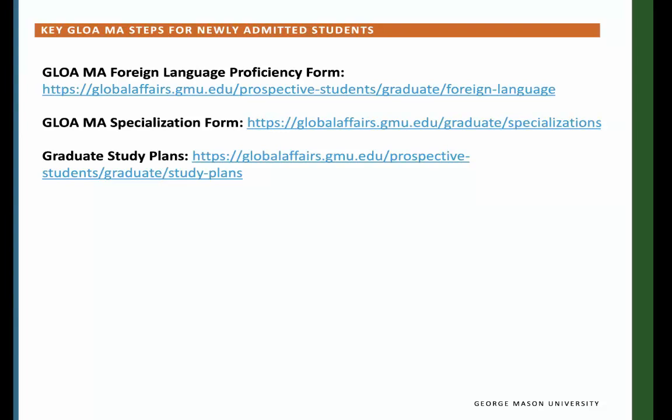Key Global Affairs Master's Steps for Newly Admitted Students. The steps listed on this slide are specifically for the Global Affairs Masters. If you have not yet completed and submitted the Global Affairs MA Foreign Language Proficiency Form and the Global Affairs MA Specialization Form, please do so by the first day of classes. Also, I want to bring your attention to the Graduate Student Study Plan in case you would like to plan a tentative coursework schedule. We can also do this during an advising appointment — just send an email to globama.gmu.edu.